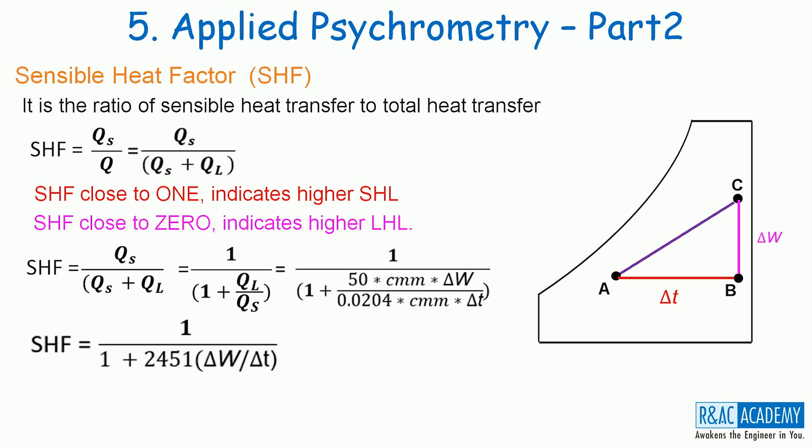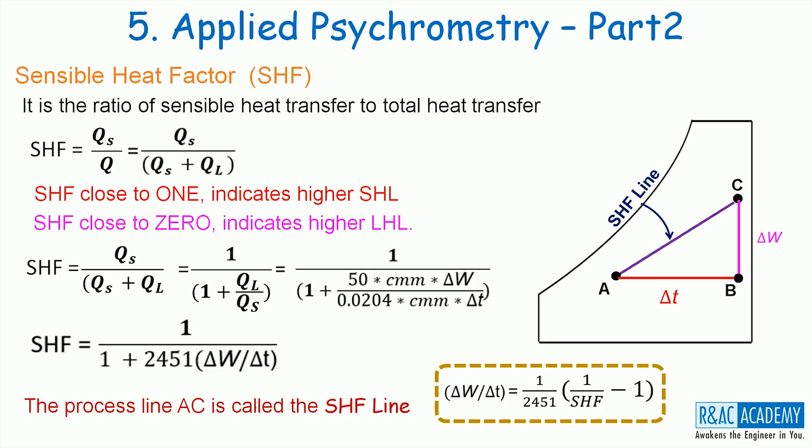These two are reflecting in the sensible heat factor expression and hence the process line AC is called the SHF line. By rearranging the SHF expression, we will get this expression. This is one of the very useful and important expressions in psychrometric calculations.